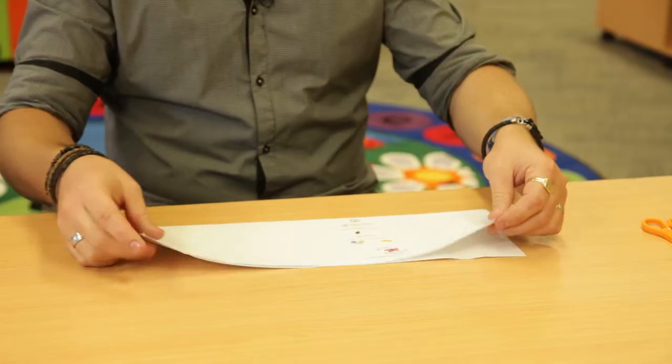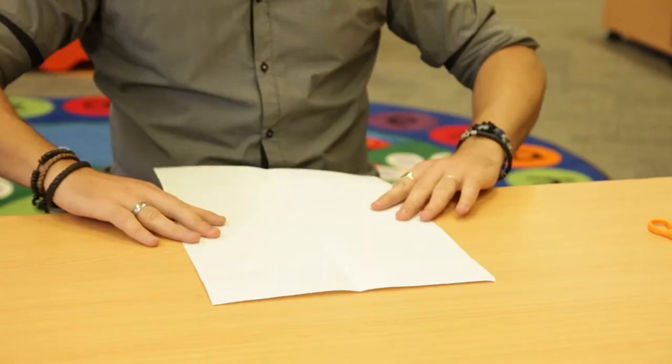We then open the piece of paper, turn it 90 degrees and fold it in half again.